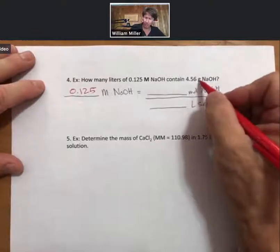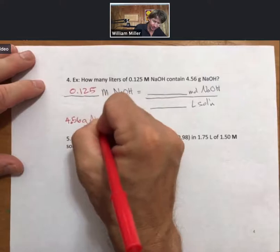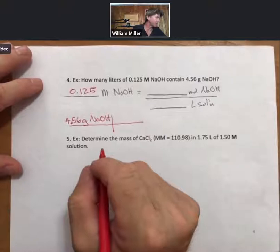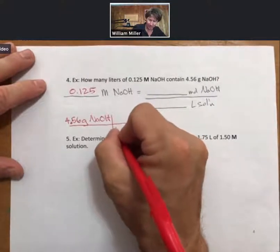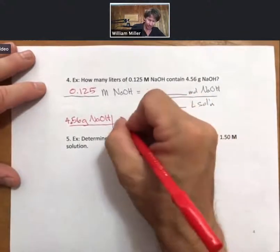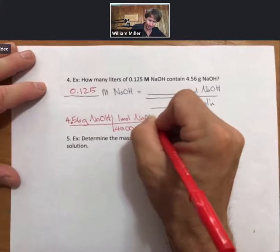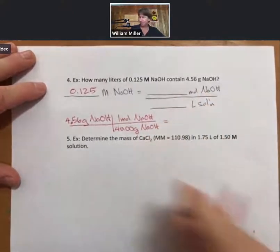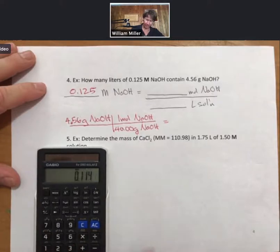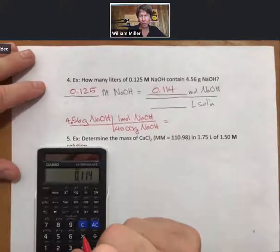I don't know the moles, but I do know the grams. We will do so many gram to mole, mole to gram conversions. Turns out the molar mass is 40.00 grams per mole. Multiply this out, or in this case, divide. 0.114.